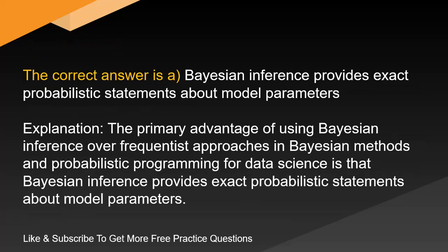The correct answer is A: Bayesian inference provides exact probabilistic statements about model parameters. The primary advantage of using Bayesian inference over frequentist approaches is that Bayesian inference provides exact probabilistic statements about model parameters.